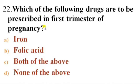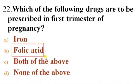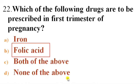Next question: Which of the following drugs are to be prescribed in the first trimester of pregnancy? Options: A) Iron, B) Folic acid, C) Both, D) None. Answer is B — Folic acid. Iron should not be prescribed in the first trimester due to nausea and vomiting, so folic acid is administered in the first trimester.